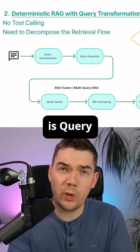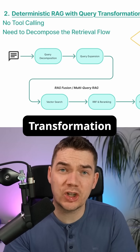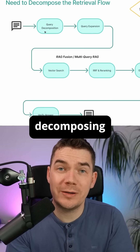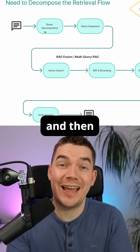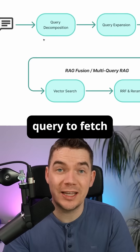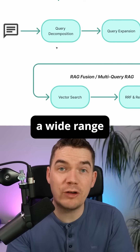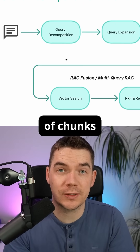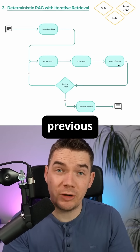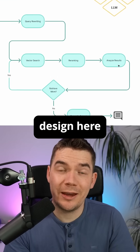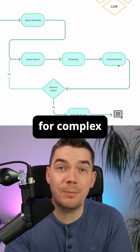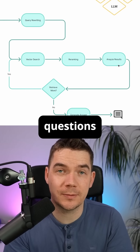Number two is query transformation with RAG Fusion. Here we are decomposing and then expanding on a user's query to fetch a wide range of chunks. Number three is iterative retrieval. Unlike the previous design, here we have multiple passes for complex questions.